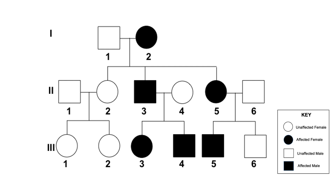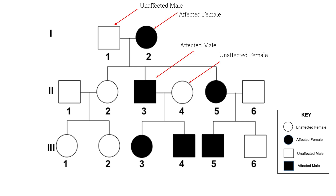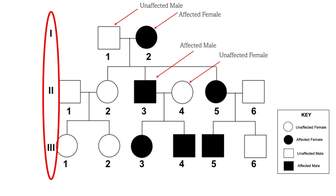A pedigree chart is a visual representation of a family's genetic history, showing the relationships between individuals and indicating the inheritance of traits or genetic conditions over generations. Unshaded squares represent unaffected males, while shaded squares represent affected males. Generations are represented by Roman numerals — the older generation is at the top and the younger generation is at the bottom. For each generation, numbers are given to individuals to help keep track of patterns of inheritance more easily. Many pedigree charts include a key or legend that explains the meaning of different symbols, colours or patterns used in the chart, to help interpret the information more accurately.